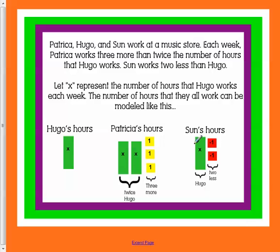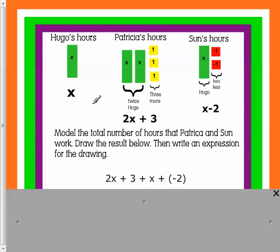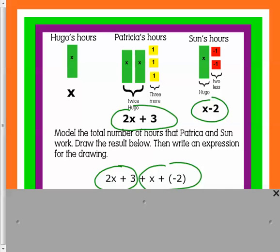Okay, so we can model these with tiles to show our hours worked. So if we wanted to model the number of hours that both Patricia and Son work, we can draw the result below and write an expression. So Patricia is 2x plus 3, so we write it right here. Son's hours is x minus 2, and we can write it like this.